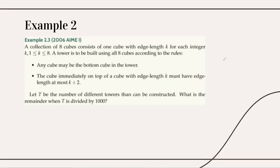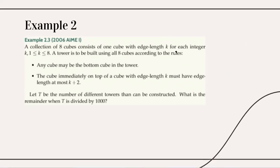For example, if we have a cube with side length 5, the cube directly above it can have side length at most 7, since 5+2=7. So we cannot have an 8 directly on top of a 5, but we could have an 8 somewhere higher up — it says 'immediately on top.' They're asking for the number of different towers that can be constructed, mod 1000. The first thing to determine is what n should be for our recursion. Since casework is super tedious, we let a(n) be the answer when we have n blocks, and we want a(8).